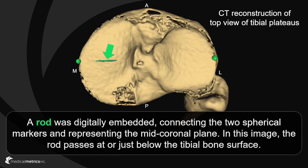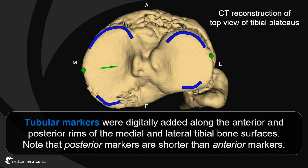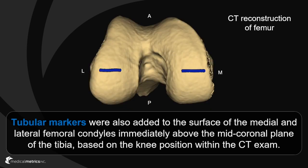In this knee, the rod passes at or just below the tibial bone surface. Tubular markers were added along the anterior and posterior rims of the medial and lateral tibial bone surfaces. Note that the posterior markers are shorter than the anterior markers. Tubular markers were also added to the surfaces of the medial and lateral femoral condyles immediately above the mid-coronal plane of the tibia, based on the knee position when the computed tomography exam was obtained.